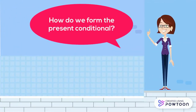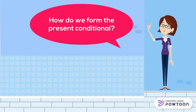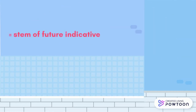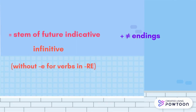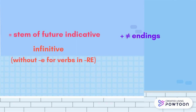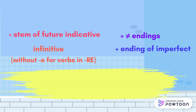How do we form the present conditional? It is based on the same stem as the future indicative, but with other endings. We take the infinitive of the verb without the 'e' for verbs in '-re', and we add the endings of the imperfect tense.